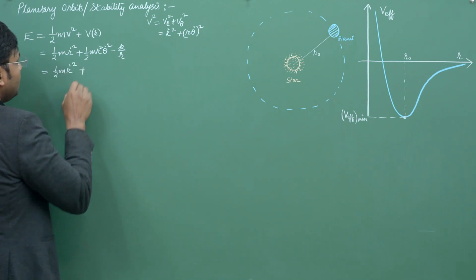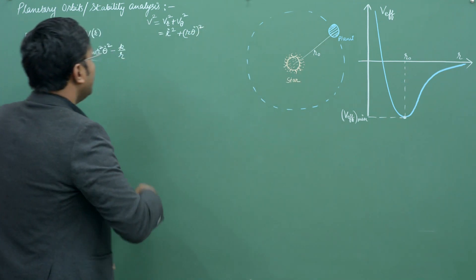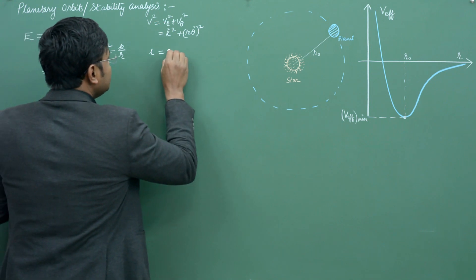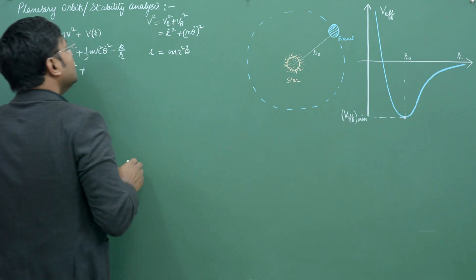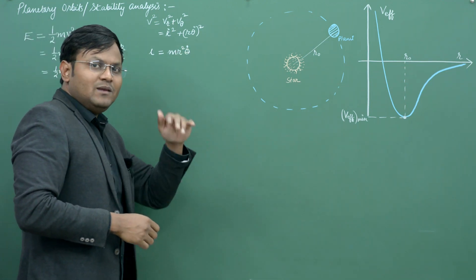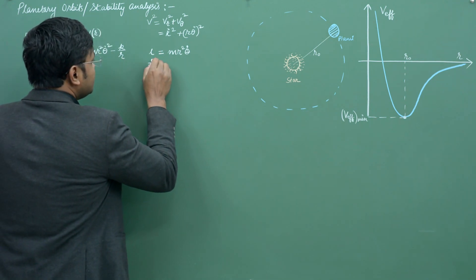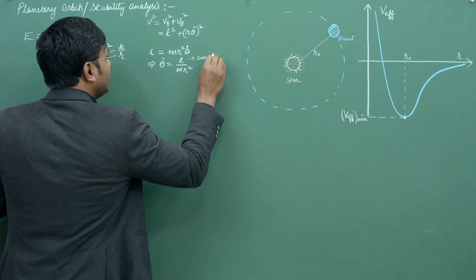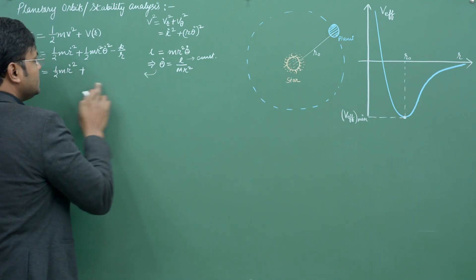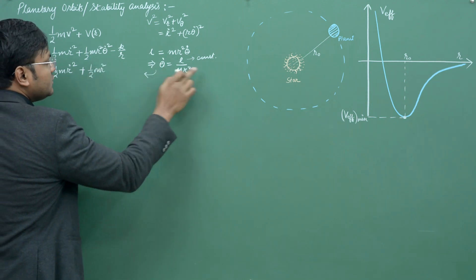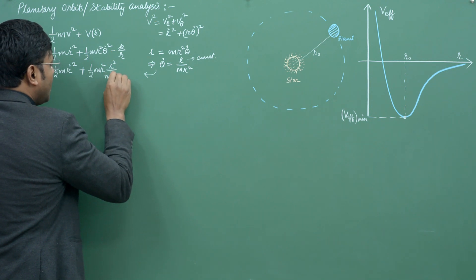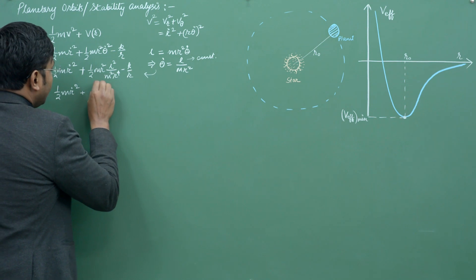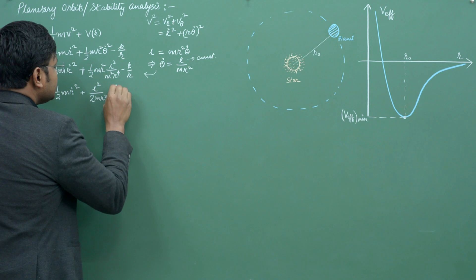Simplifying, the total energy becomes ½mṙ² + ½mr²θ̇² − k/r. Now, θ̇ represents the angular velocity. Since angular momentum l = mr²θ̇ is conserved, we have θ̇ = l/(mr²), where l is a constant. Substituting this in, the term ½mr²θ̇² becomes l²/(2mr²), so the total energy becomes ½mṙ² + l²/(2mr²) − k/r.